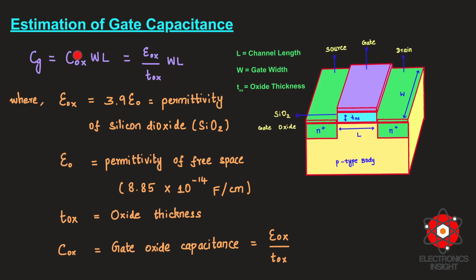Cox is the gate oxide capacitance, defined as ε_ox / T_ox, where ε_ox = 3.9 × ε₀ is the permittivity of silicon dioxide and ε₀ is the permittivity of free space, equal to 8.85 × 10⁻¹⁴ F/cm. T_ox is the oxide thickness. This gives us the gate capacitance fully modeled using the parallel plate capacitor concept.